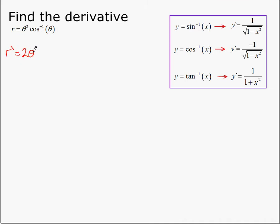So the derivative is the derivative of the first, keep the second, plus keep the first, derivative of the second. So derivative of cosine inverse is minus 1 over the square root of 1 minus theta squared, times the derivative of theta, which is 1.